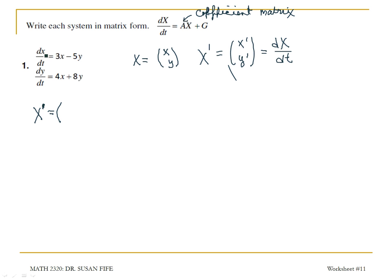In this case, our coefficient matrix is 3, negative 5, 4, 8. The variables need to be in order, x and then y, and then you have the first equation and then the second equation. Then times x.